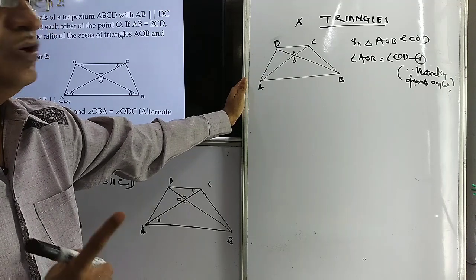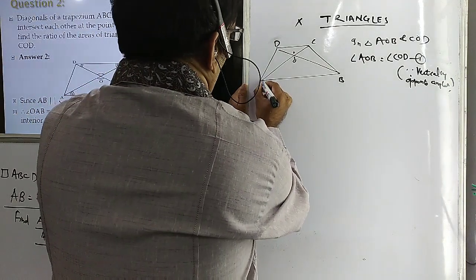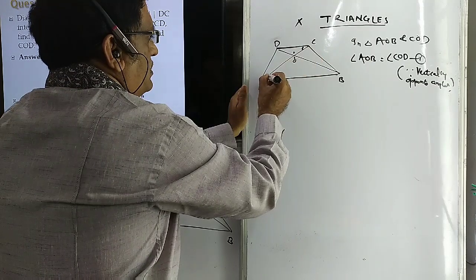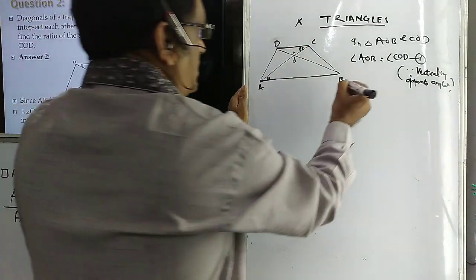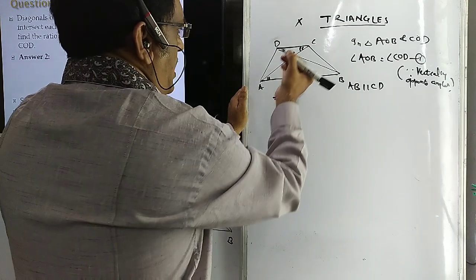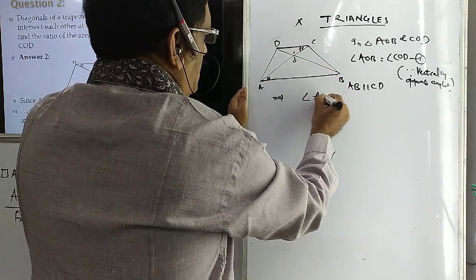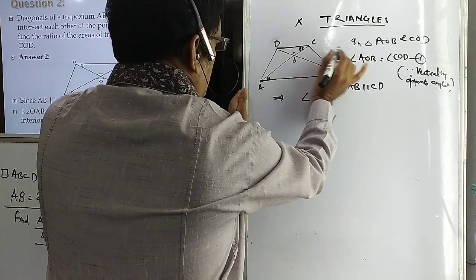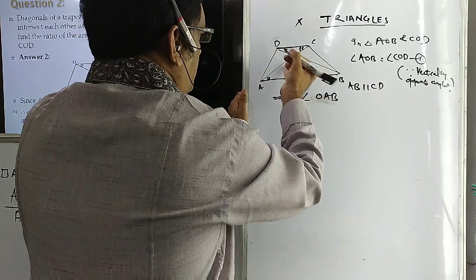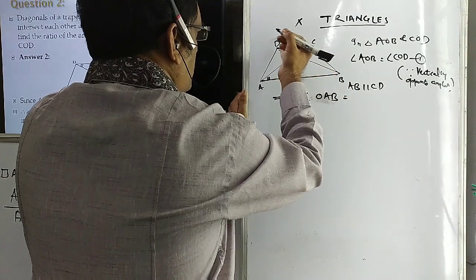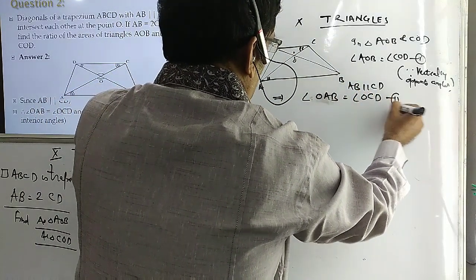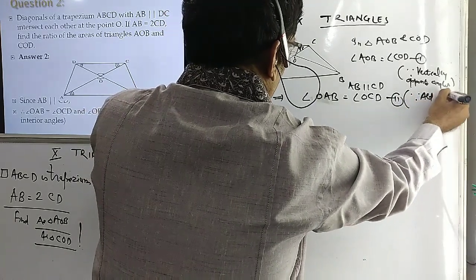We require one more condition. These are two parallel lines — because ABCD is a trapezium, AB is parallel to CD. If these are two parallel lines, then we have alternate interior angles. AB parallel to CD implies angle OAB equals angle OCD. That is condition two — alternate interior angles.